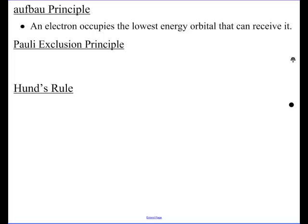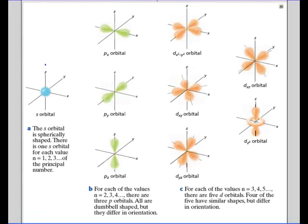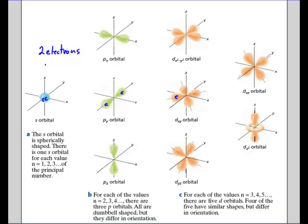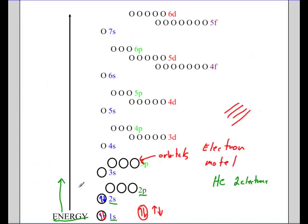The Pauli Exclusion Principle states that you can only put two electrons in a single orbital. Every orbital — the s orbital, the p orbital shapes, all of them — can only hold two electrons. So it doesn't matter how many electrons are available; you can only put two per orbital. That's what the Pauli Exclusion Principle tells us, and that's why I'm putting two arrows in each orbital space.